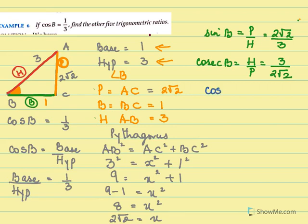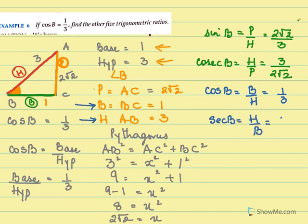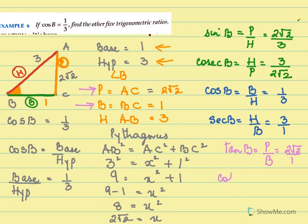Next we are going to find cos of B. Cos of B — cos is base over hypotenuse. The base is here and this is the hypotenuse, so it will be 1 by 3. And the reciprocal of cos is sec, so sec of B will be hypotenuse over base, that is 3 over 1. Next we need to find tan of B. Tan of B is perpendicular over base, so that will be 2 root 2 over 1. And the reciprocal of tan is cot, so cot B will be base over perpendicular, that is 1 over 2 root 2.